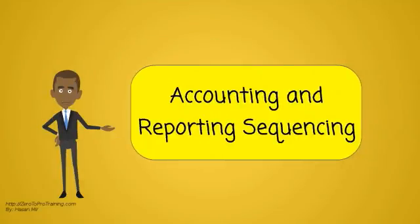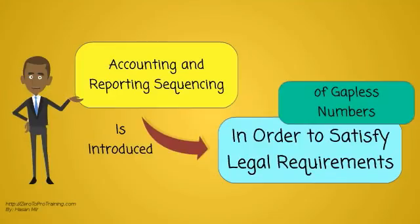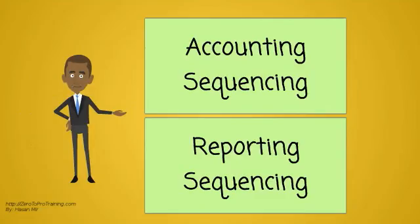Accounting and Reporting Sequencing: In order to satisfy legal requirements like gapless journal numbers, additional ways to assign document numbers to journal entries are introduced. Two types of sequencing could be set up using ASM screens: Accounting Sequencing and Reporting Sequencing.